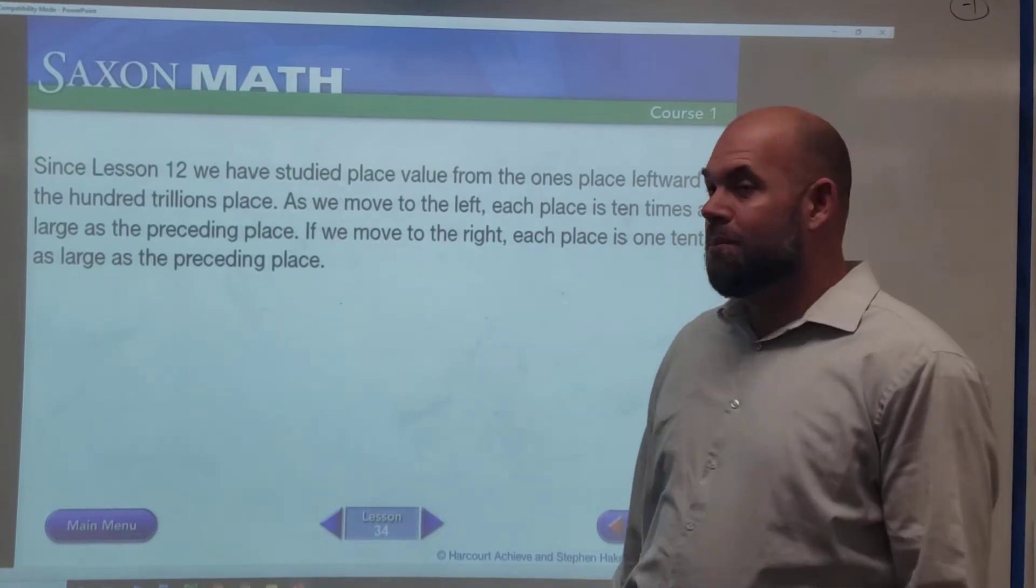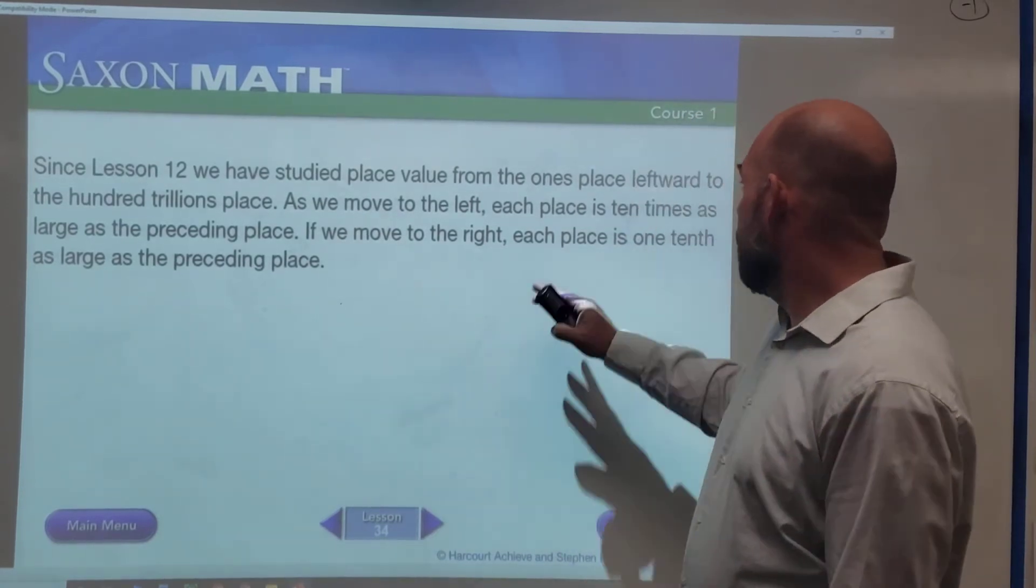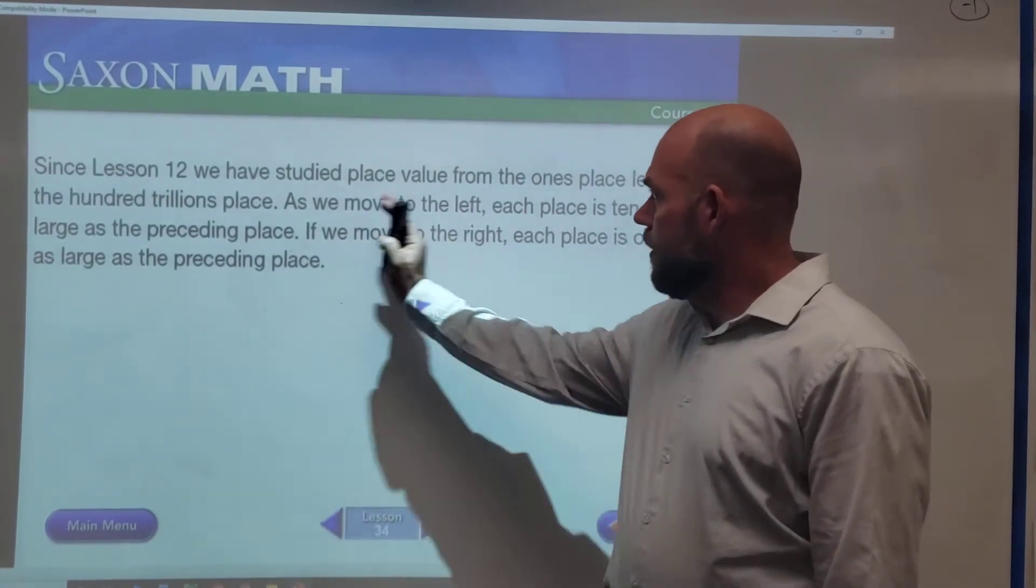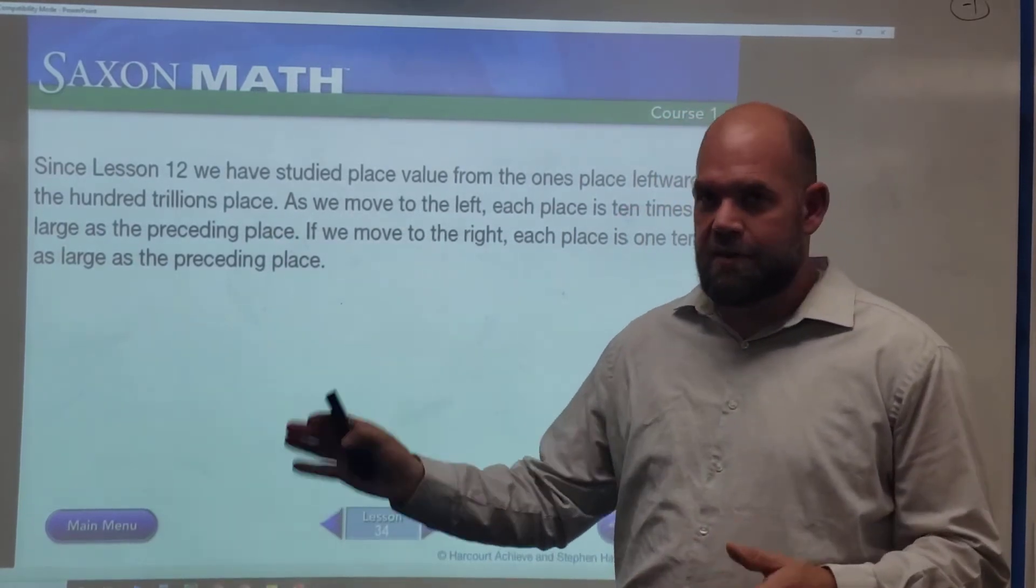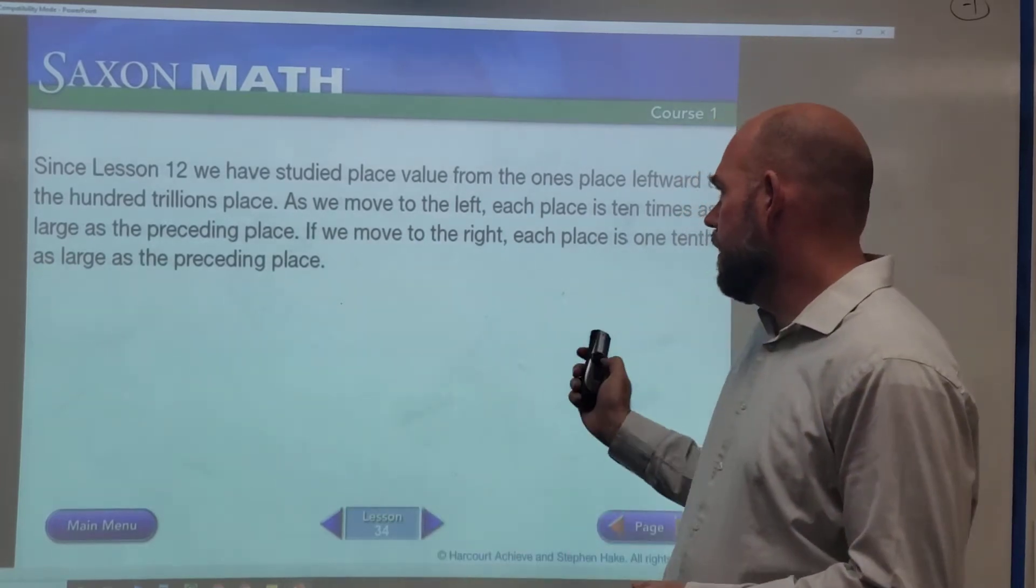Since Lesson 12, we've been studying place value all the way moving leftward to the hundred trillionths place. So we go from the ones to the tens to the hundreds, thousands, ten thousands, hundred thousands, etc.